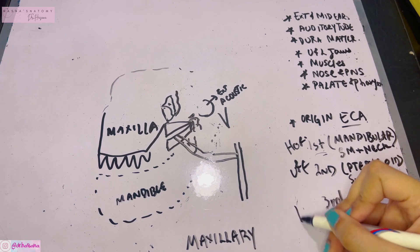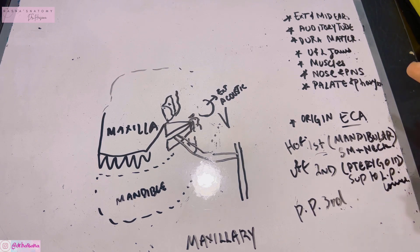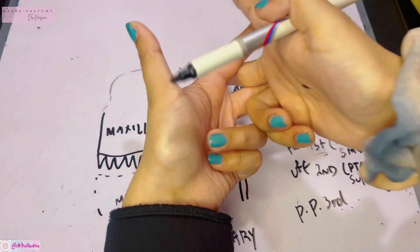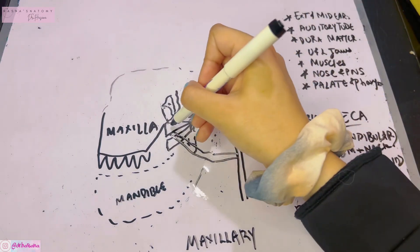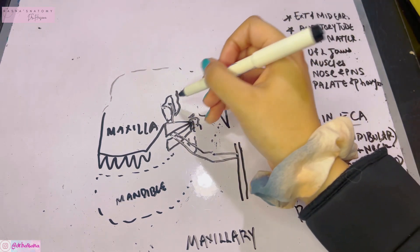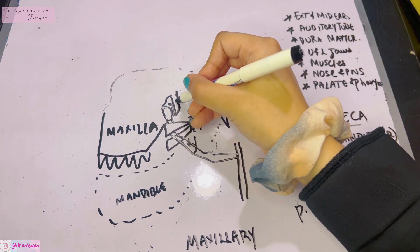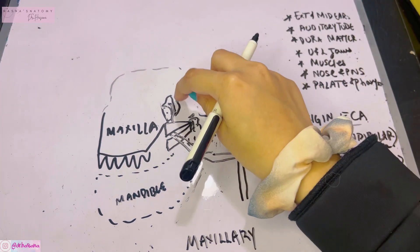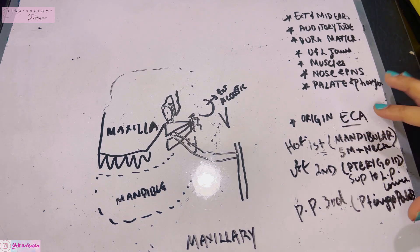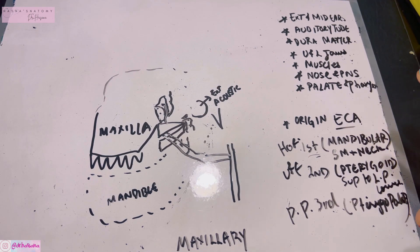The third part is the pterygopalatine part, which goes into the pterygopalatine fossa. To get there, it runs between the two heads of the lateral pterygoid to go deeper, and once through, it enters the pterygopalatine fossa after penetrating the pterygomaxillary fissure — the space between the pterygoid plate and the maxilla bone.